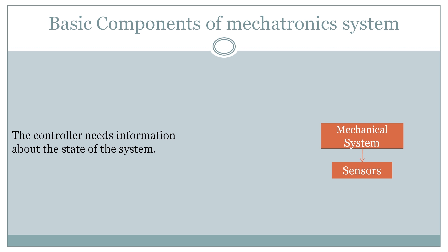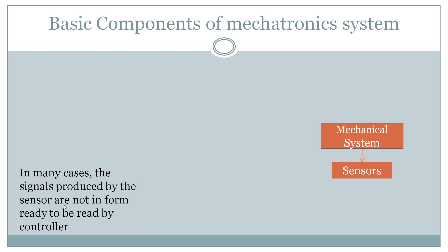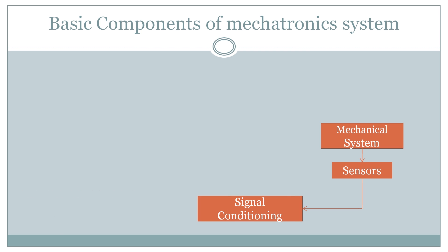Whatever signal is generated by the sensor is not in a form ready to be read by the controller, because the signal may contain noise or its magnitude may be very small. For that, we initially need to perform signal conditioning — also called amplification — where we increase the magnitude of the signal. After signal conditioning, the signal is still in analog form, so we then need to convert it from analog to digital.